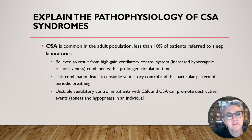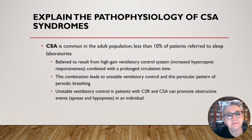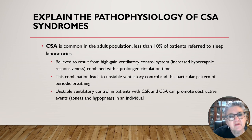Objective three: explain the pathophysiology of CSA syndromes. Central sleep apnea is common in the adult population and occurs in less than 10 percent of patients referred to sleep laboratories. It is believed to result from high-gain ventilatory control, increased hypercapnic responsiveness, combined with prolonged circulation time. This combination leads to unstable ventilatory control and a pattern of periodic breathing. Unstable ventilatory control can promote obstructive events, apneas, and hypopneas.